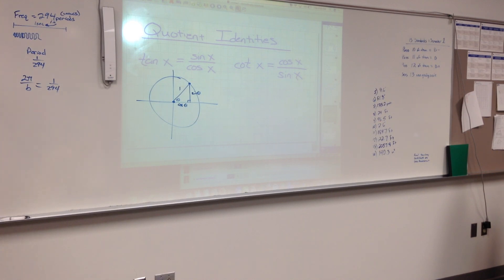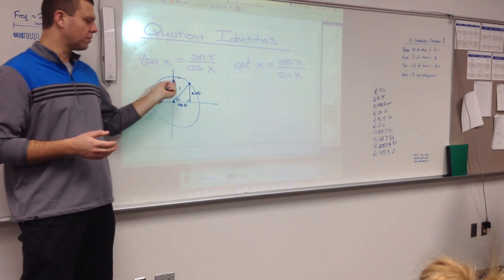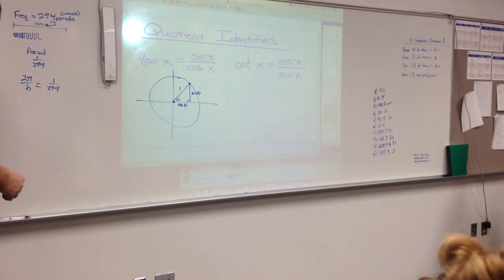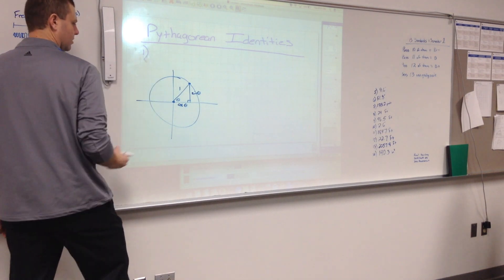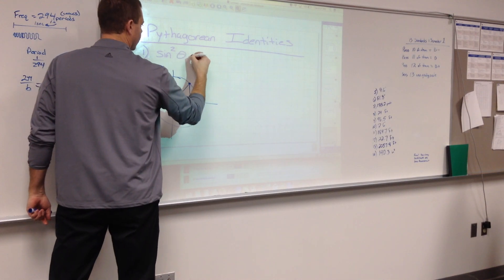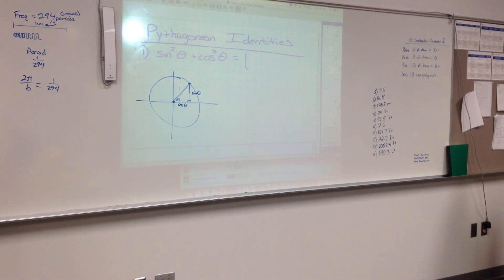That leads us into our next set: the Pythagorean identities. Pythagorean's theorem — a squared plus b squared equals c squared on a right triangle. Looking at the unit circle picture, if you do a squared plus b squared equals c squared, you get sine squared plus cosine squared equals one squared, which equals 1. So your very first Pythagorean identity is sine squared plus cosine squared equals 1.